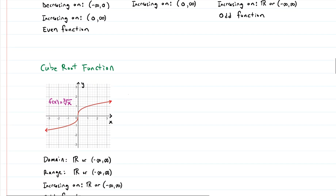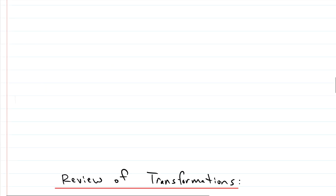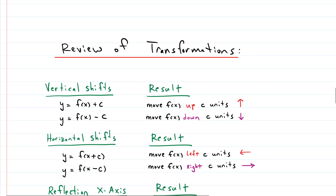Our last function is the cube root function. It's kind of like the square root, but we're taking the cube root. On the right-hand side it looks similar to the square root function, but it also has a left-hand side — because the square root doesn't accept negative inputs or produce negative outputs, so it has no left side, but the cube root does. Those are the seven most common functions and their graphs in algebra.